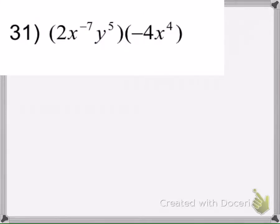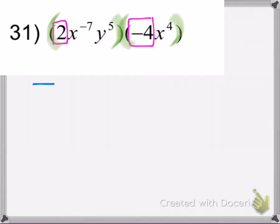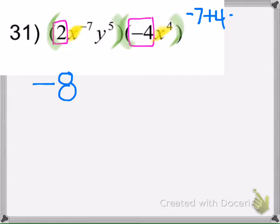In this next example, the 2 and the negative 4 are coefficients, and we have two parentheses next to each other so we know we're multiplying. We multiply the coefficients just like normal: 2 times negative 4 is negative 8. Then I see that I have bases that are the same — an x here and an x here — so the rule is when you're multiplying to add the exponents: negative 7 plus 4 is negative 3, and when you have a negative exponent it goes to the denominator.